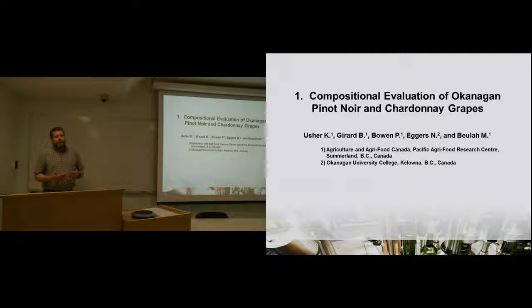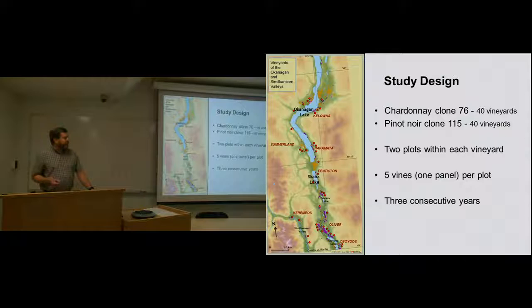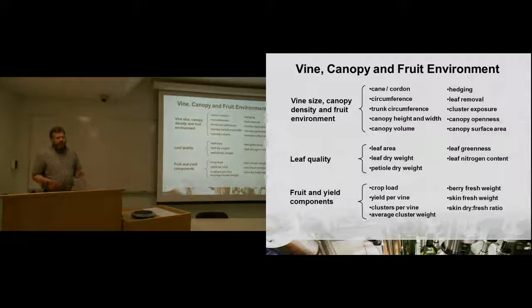I'm going to go through a number of projects that we had, and each project had a number of experiments in it. This one really started us off looking at how the environment and things like road direction and how grapes are presented to the sun, essentially, and light, how that influences flavor and aroma in grapes. This study, we looked at both Chardonnay and Pinot Noir, we're only going to talk about Chardonnay today, and we had 40 different sites throughout the Okanagan Valley, indicated by the red dots. Within each site, we had two plots, and one panel or five vines per plot, so basically, at each site, we had 10 vines we were studying. We did this over three consecutive years.